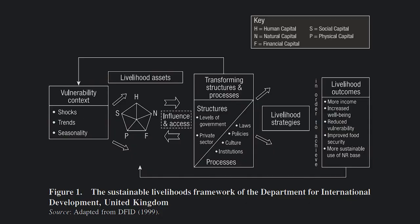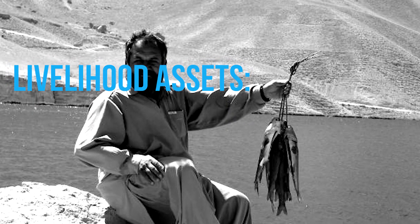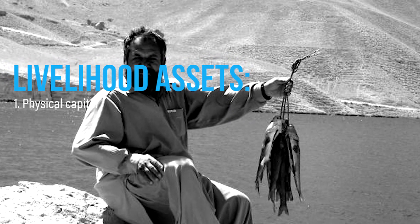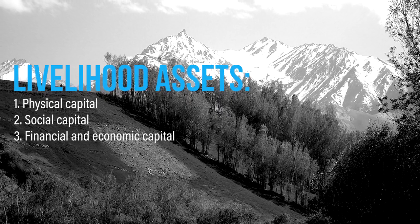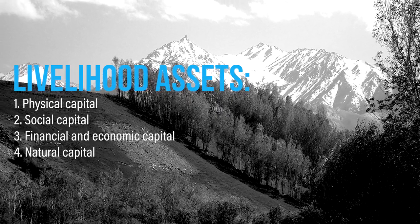A number of factors will determine a household's resilience and ability to absorb the stress and shock which accompanies conflict without turning to violence. In building a sustainable livelihoods approach and fostering resilience, we need to look at the type of assets available to households, which range from physical assets to social assets, financial and economic assets, as well as natural resources.